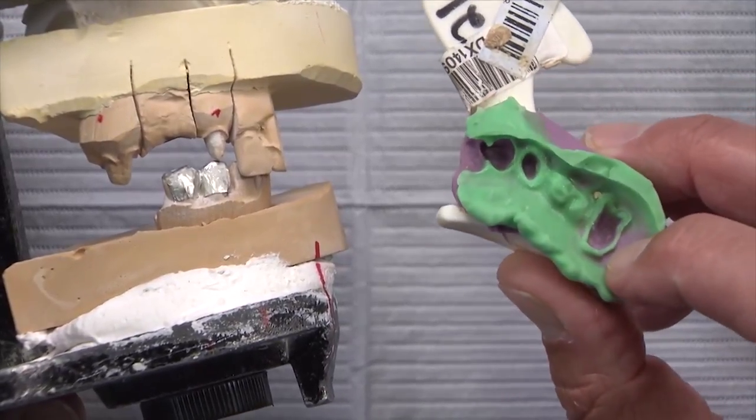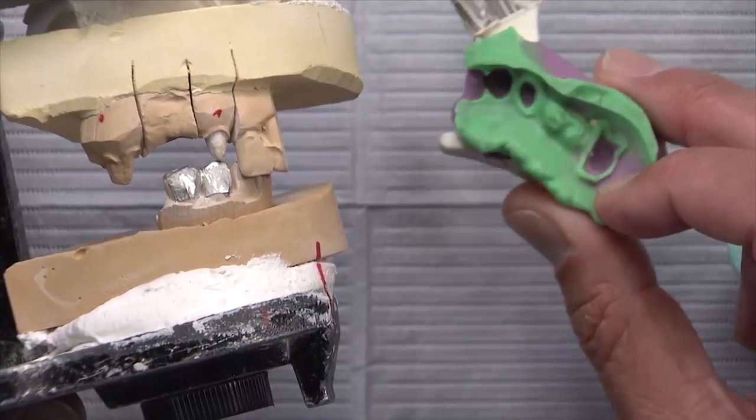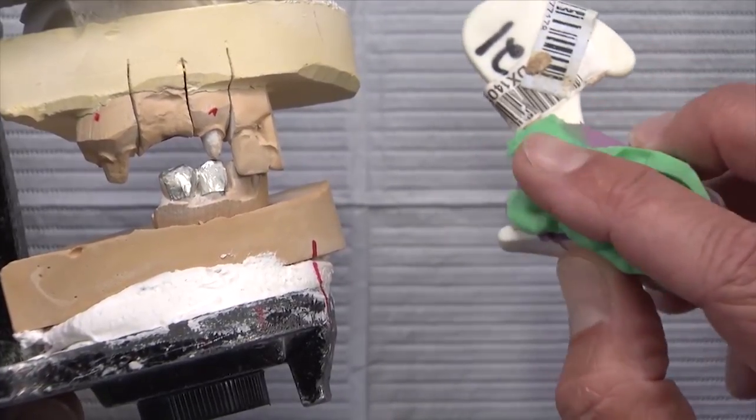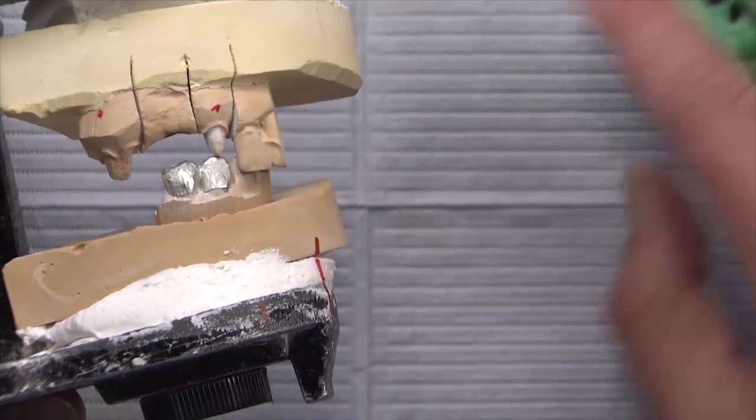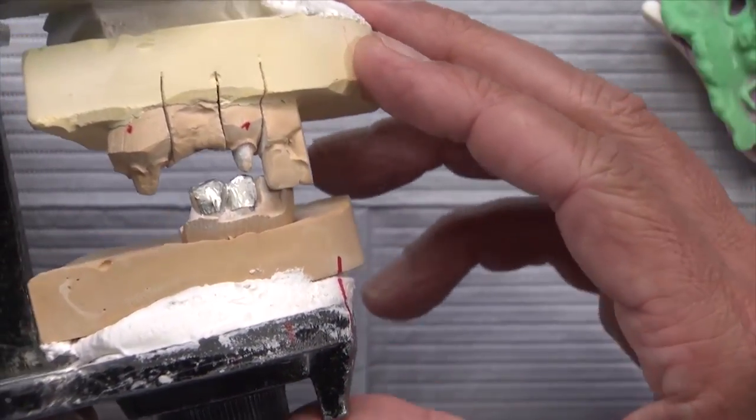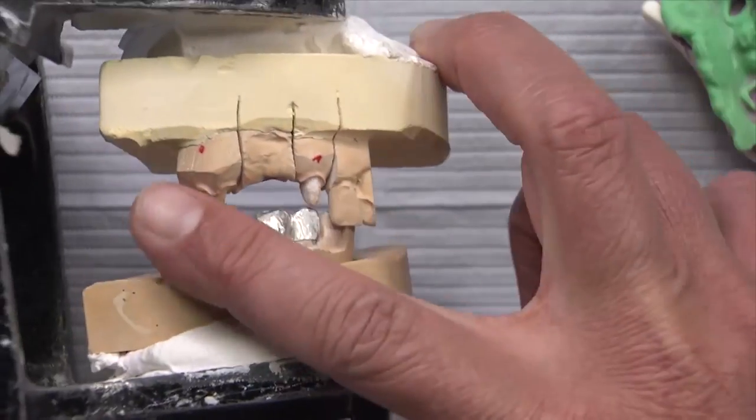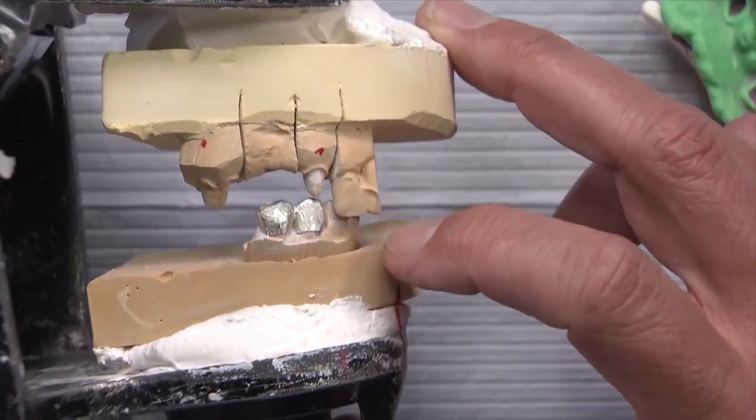If there was one more molar back here, we'd have a 50% chance of getting it correct. But all the posterior teeth have been prepped. And the only thing that's unprepped here is this lateral incisor. And there's just no way we're going to be able to get that right. This is for a PFM bridge. So you can see,